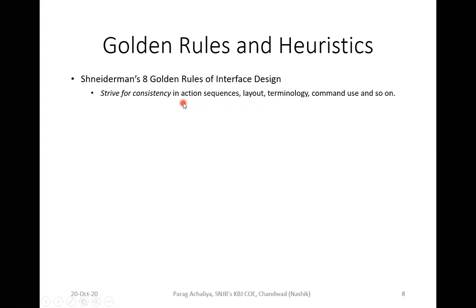Consistency should be maintained in all types of action sequences. Whatever layout or terminologies you are using in your system or design, the terminologies should be the same. For example, if you are using a button with the caption 'Total', then throughout your design you should use the same caption 'Total' everywhere — it should not vary. Terminology, commands — everything should be consistent. Only then will uniformity in the design be maintained.